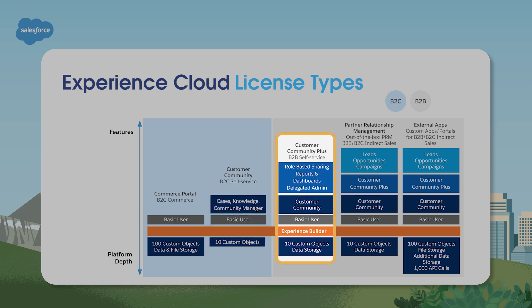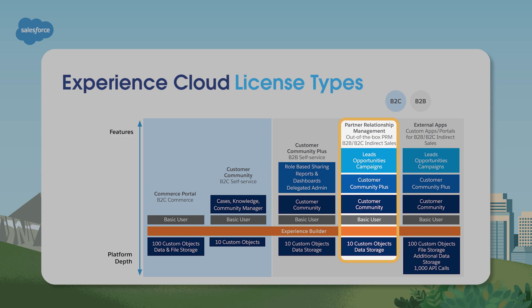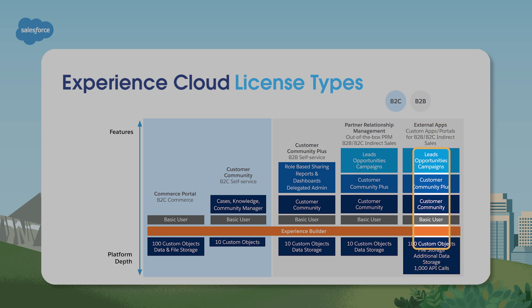Customer Community Plus is a business-to-consumer experience for sharing access to reports and dashboards. Partner Community is for business-to-business communities that need access to sales data. External Apps provide highly customized experiences incorporating CRM objects, custom objects, external data, and require additional storage. Ideal use cases are dealer, vendor, or supplier portals. This license type is also commonly used for franchise management and marketplaces.